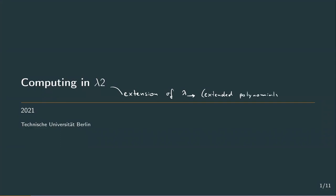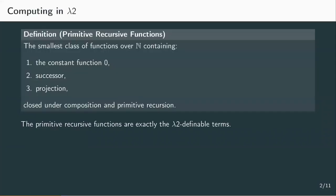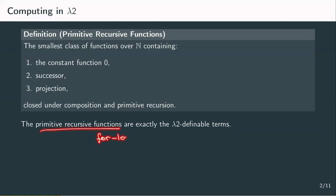With polymorphic types, we're going to be able to define primitive recursion for functions. Primitive recursive functions can be obtained from certain initial functions by a finite number of applications of composition and primitive recursion. Those initial functions are the constant function 0, the successor function, and projection. Primitive recursive functions are the functions that can be computed using only for loops — that is, loops in which the number of iterations is known ahead of time and fixed, unlike a while loop, which can go on forever.